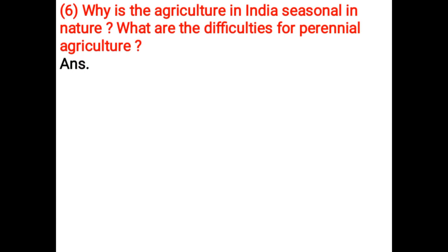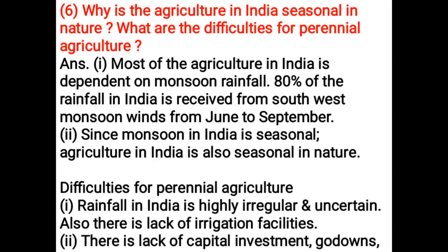Why is agriculture in India seasonal in nature? Most agriculture in India is dependent on monsoon rainfall — 80 percent of rainfall is received from southwest monsoon winds from June to September. Since monsoon in India is seasonal, agriculture is also seasonal. Difficulties for perennial agriculture: rainfall is highly irregular and uncertain; there is lack of irrigation facilities, capital investment, godowns, transportation, and awareness of scientific methods of crop cultivation.